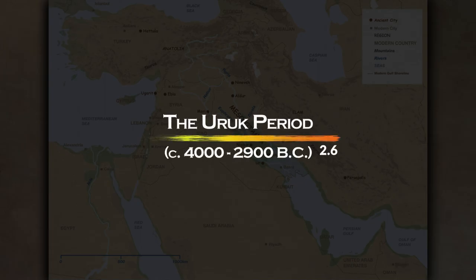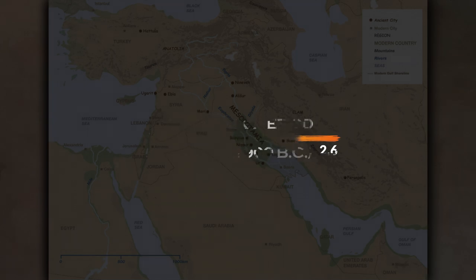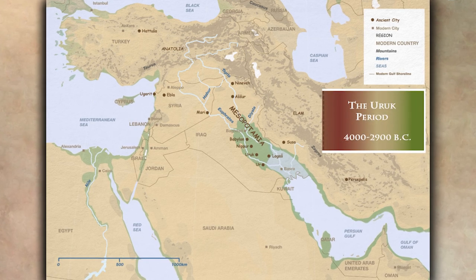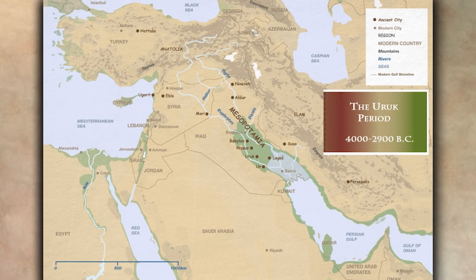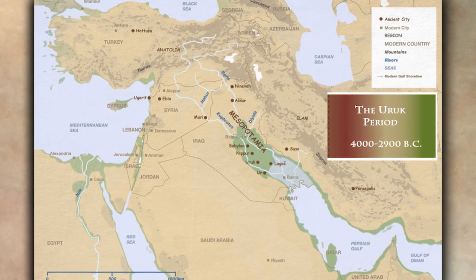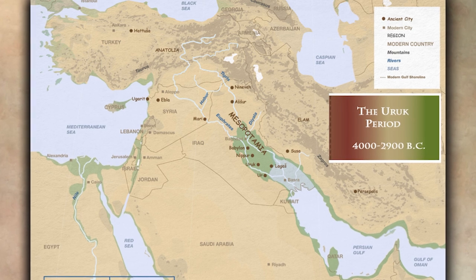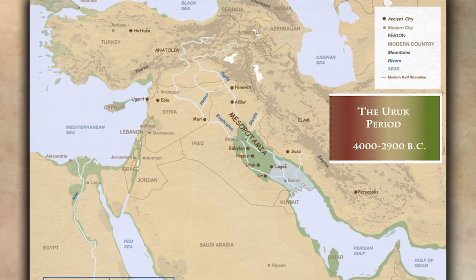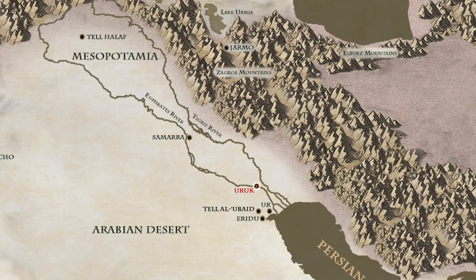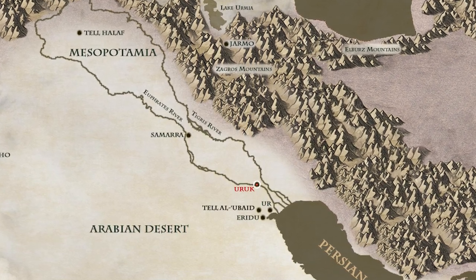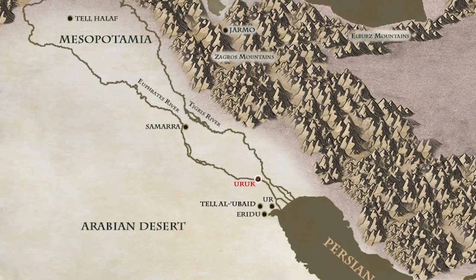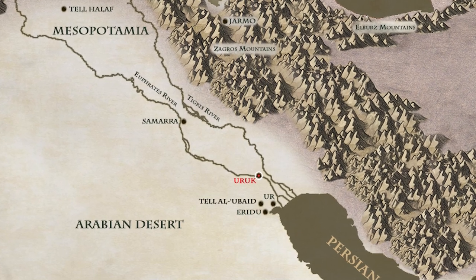The Uruk Period. The 4th millennium, roughly between 4,000 and 2,900 BC, was a crucial period of time for mankind that led to many innovations of importance, including writing and the development of the city-state. Known as the Uruk period, this lasted for the whole of the 4th millennium. This culture acquires its name from the city of Uruk due to this site being thoroughly excavated. During this period, Uruk became the most urbanized city in the world, surpassing for the first time 50,000 inhabitants.